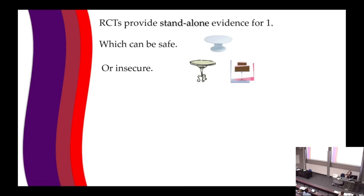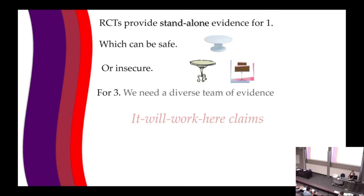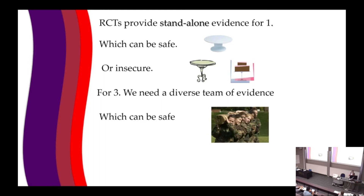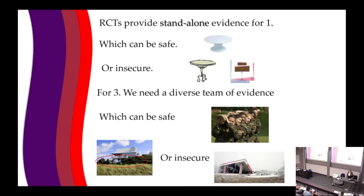Some RCTs do support the conclusion but don't support it very securely. For the third kind of claim — 'it will work here' — I think you need a diverse team of evidence. That diverse team can support the conclusion very strongly and very safely, or it could be insecure. It's not a matter of security versus insecurity; it's what types of evidence you need in the first place to really bear on the conclusion. I want to look at cases where we're going to be using heterogeneous evidence.